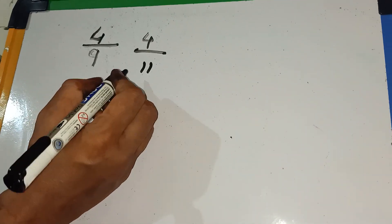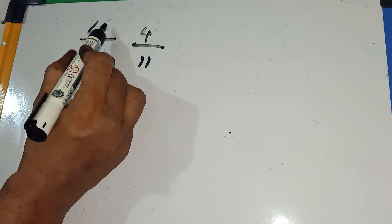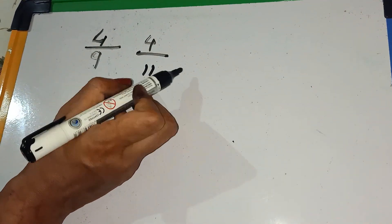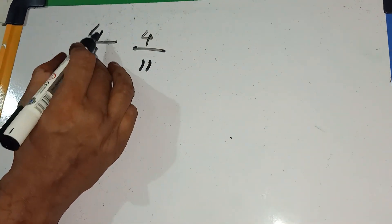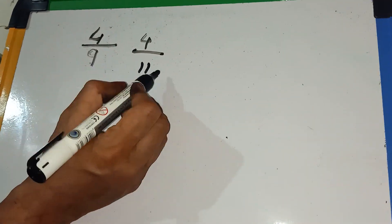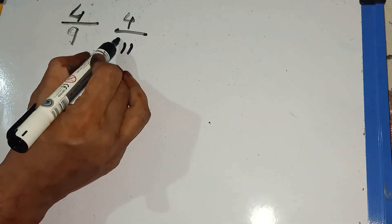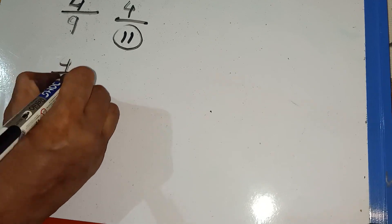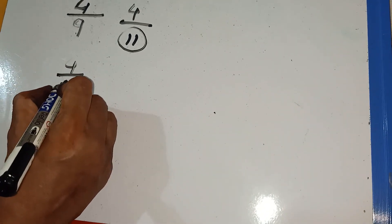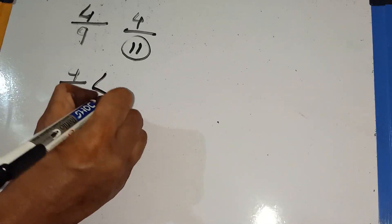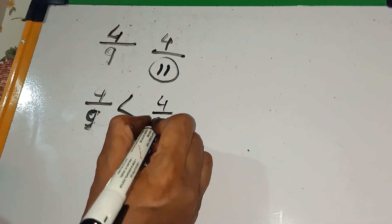So, in this sum, you see numerator is same and denominator is different. So, by seeing the picture, you can guess that if denominator is bigger. So, we can write like this. 4 by 9 is smaller than 4 by 11.